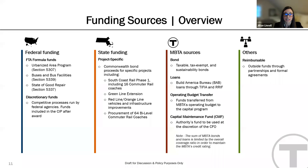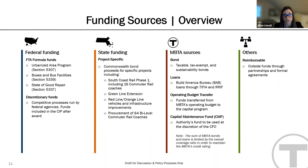Moving on to state sources, the MBTA currently receives state funding as either Commonwealth Rail Enhancement Bonds or Commonwealth General Obligation Bond Proceeds, also known as Bond Cap. Both support specific projects such as South Coast Rail Phase 1, GLX, the Red Line and Orange Line Vehicle and Infrastructure Improvements Program, and the procurement of bi-level commuter rail coaches.